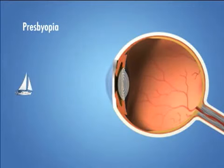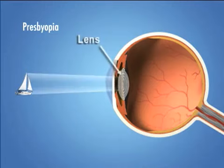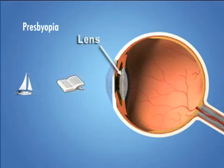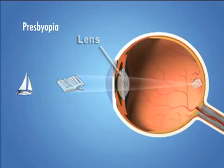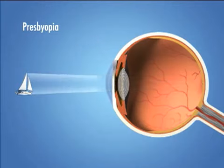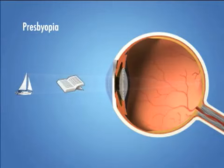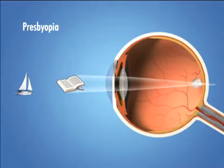Presbyopia is a normal condition associated with age that causes problems with our near vision. When we are young, the lenses in our eyes are flexible and are able to change focus easily between near and far objects. As we age, this flexibility gradually decreases. At around age 40, many people begin to need corrective lenses for reading.